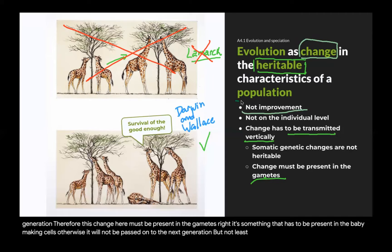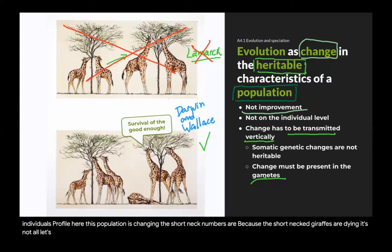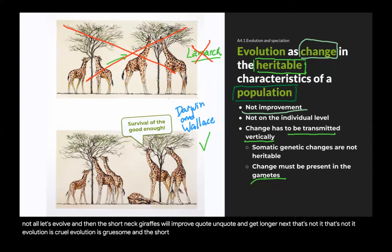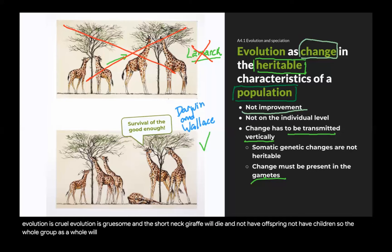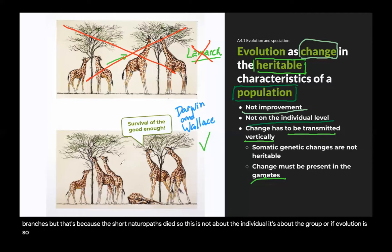Lastly, evolution is about populations, not individuals. The profile of this population is changing — the short-necked giraffe numbers are reducing because the short-necked giraffes are dying. It's not that short-necked giraffes will improve and get longer necks. Evolution is cruel and gruesome. The short-necked giraffe will die and not have offspring, so the whole group will have fewer of these giraffes and become better adapted to eating leaves on tall branches.